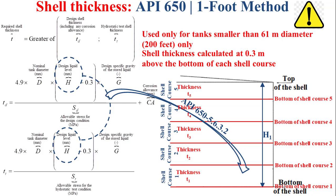The required shell thickness t1 is then the greater of td1 and tt1. Similarly, to determine t2 for shell course 2, we use h2 — the height from the bottom of shell course 2 to the top. In the same way, we determine t3 based on h3, t4 based on h4, and t5 based on h5.